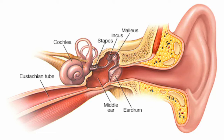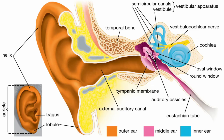The malleus connects to the tympanic membrane, transferring auditory oscillations to the incus and then the stapes. The stapes connects to the oval window, allowing mechanical energy to be transferred to the fluid-filled inner ear. These sound waves originate at the outer ear in response to vibrations in the air. The outer ear captures these sound waves, which then travel down the external auditory canal where they hit the eardrum, clinically referred to as the tympanic membrane. The membrane vibrates, which in turn causes the ossicles of the middle ear to also vibrate.